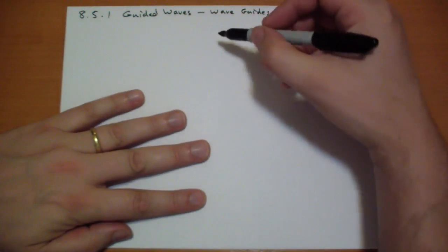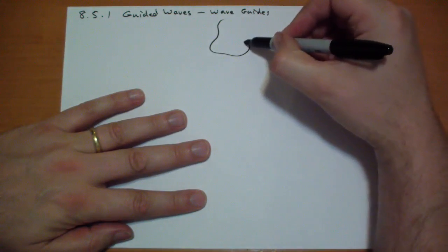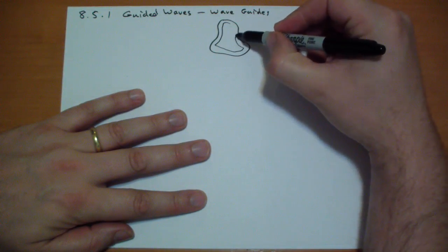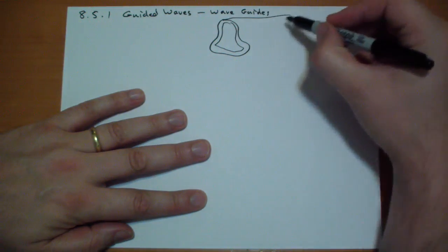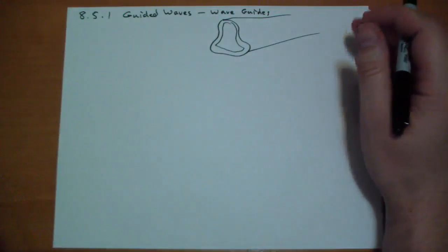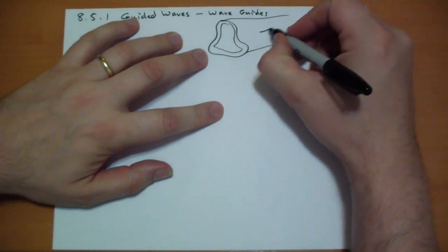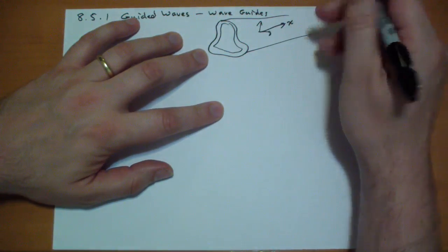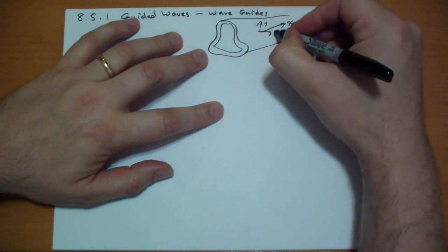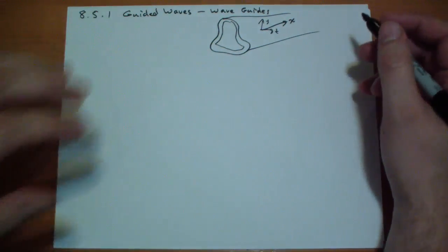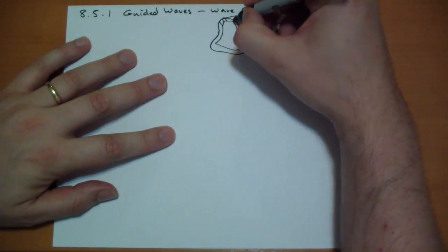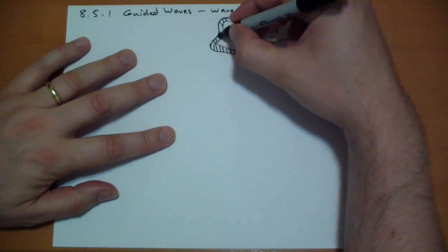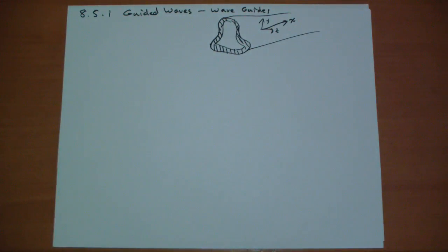So, assume we have some shape — it's a conductor, and this is just a cross-section, so this thing goes on for infinity. This is the x-direction, down the tube, and you have y, and then z with the x. So y goes up. And this is a conductor — let's assume it's a perfect conductor, just to make the math easy. Otherwise it would be too hard.